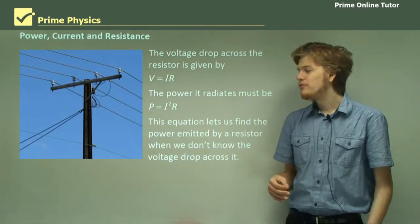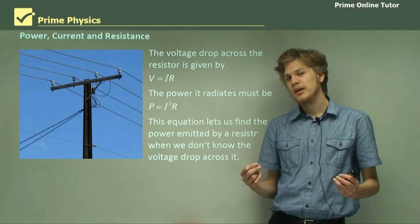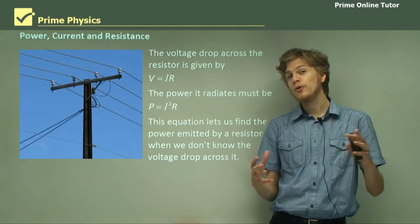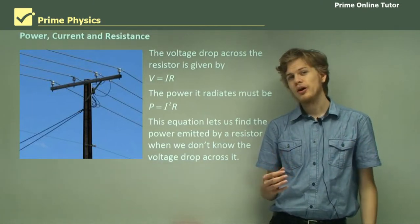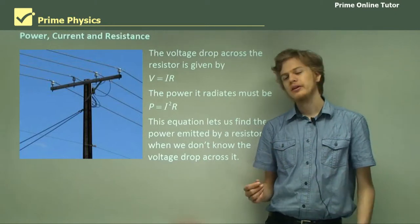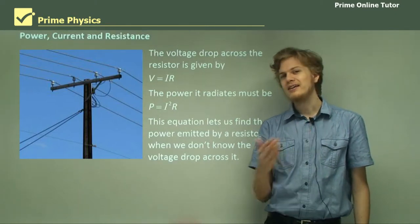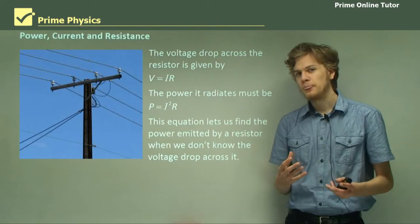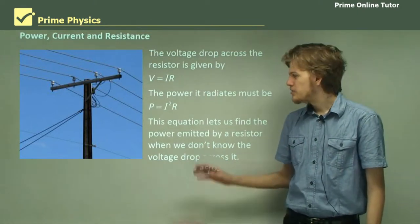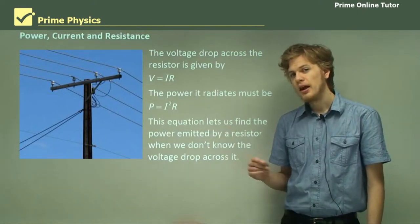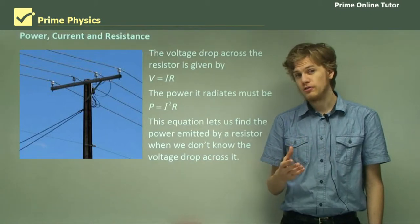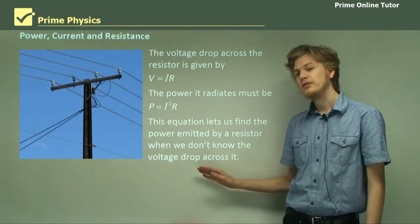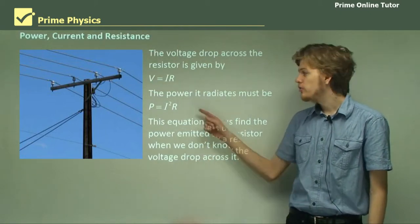For example, if we have a very, very long electric wire, it's very difficult to measure the voltage drop across it because we can't get an enormous voltmeter at each end of the electric wire. What we can do is measure the current through it. And if we know the current through it and the resistance of the wire, then we can calculate the power radiated by it using this equation.